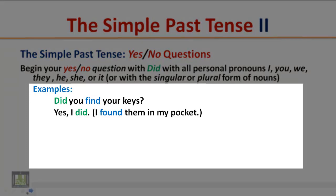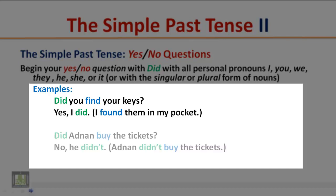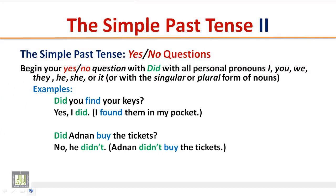Examples: Did you find your keys? Yes, I did — I found them in my pocket. Did Adnan buy the tickets? No, he didn't. Adnan didn't buy the tickets.